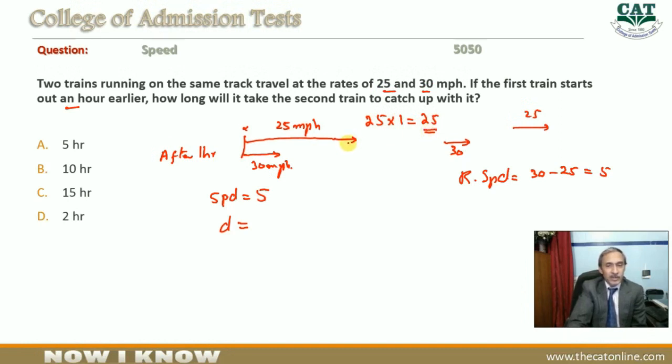The distance to cover is 25 miles. One train is at 25 miles per hour and the other is at 30. This means that every hour, the difference is 5 miles per hour, which is the difference in speed.